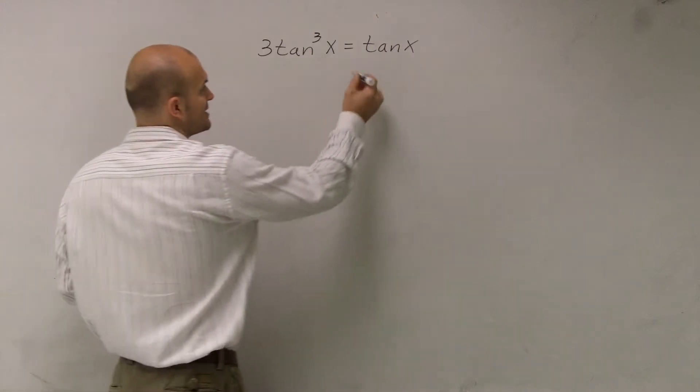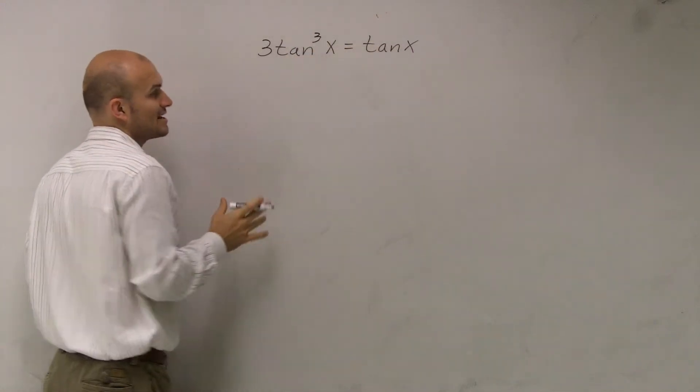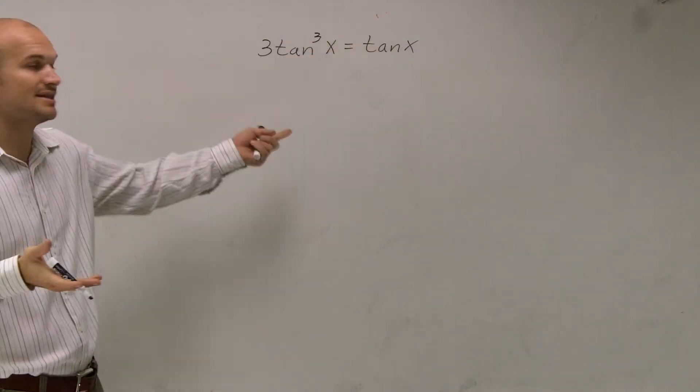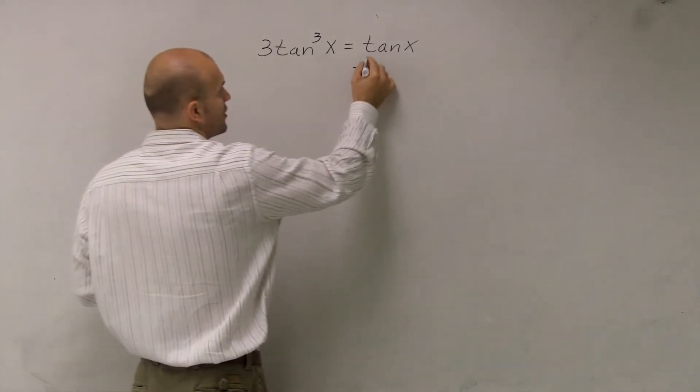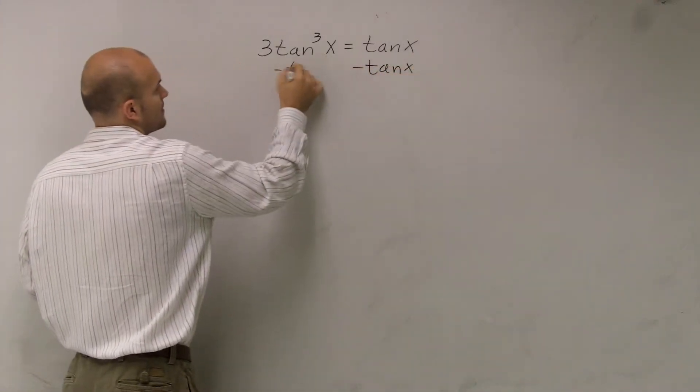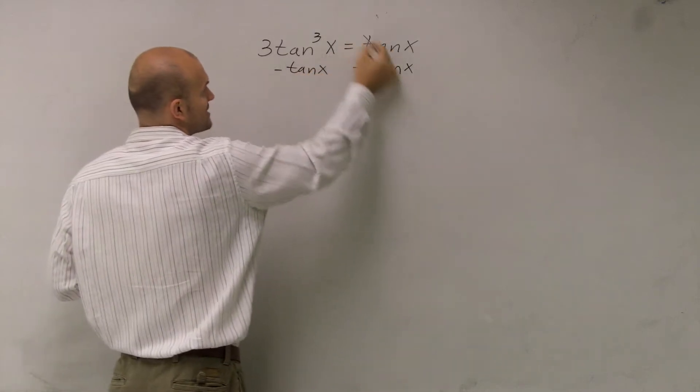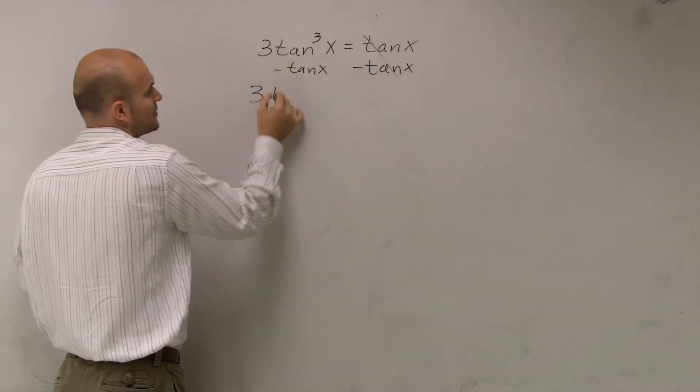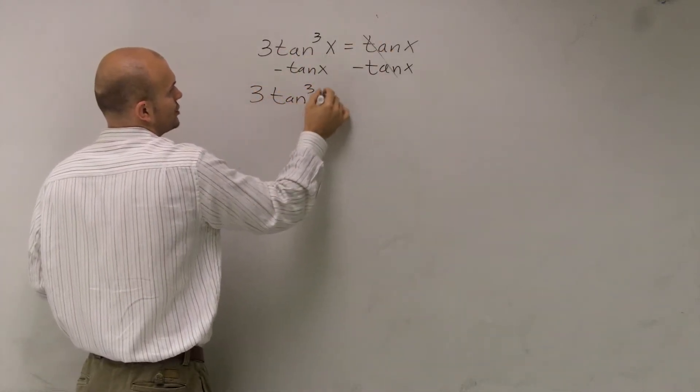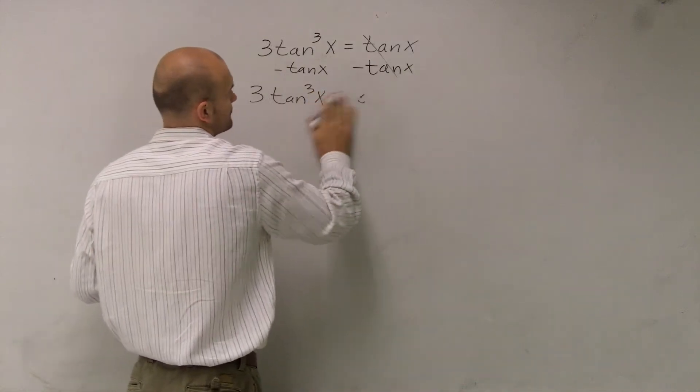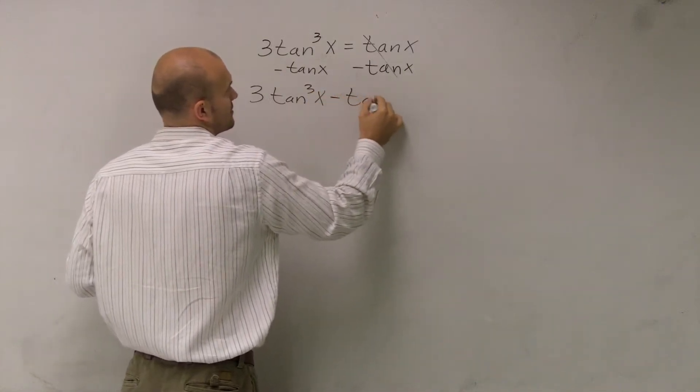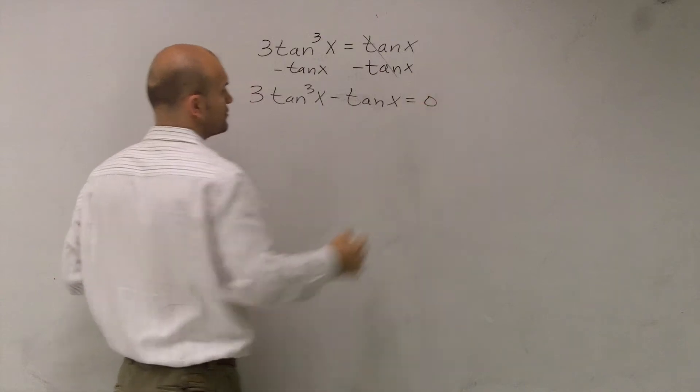So the first thing I see I'm going to have to do is I've got to get my tangent of x, right? I'm trying to solve for tangent of x. I've got to get those on to the same side. So I'm going to subtract the tan of x from this right side to get over here. So now I have 3 tangent cubed of x minus tangent of x equals 0, right?